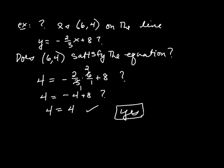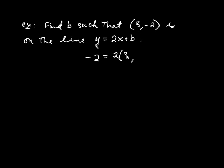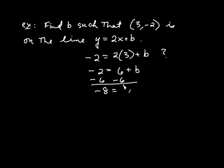Something else we need to do is illustrated in the following example. Find b such that the point (3, −2) is on the line y equals 2x plus b. What has to be true is that these coordinates must make this equation true. We replace y with negative 2 and x with positive 3: negative 2 equals 2 times 3 plus b, so negative 2 equals 6 plus b. Subtracting 6 from both sides, b must be negative 8.